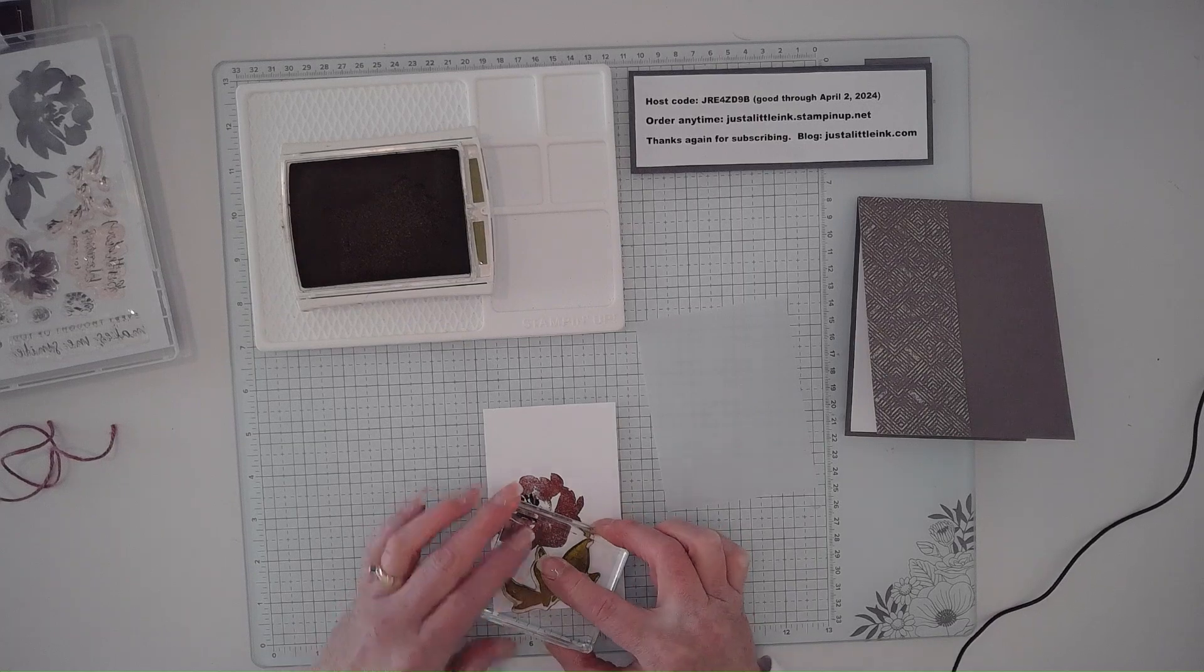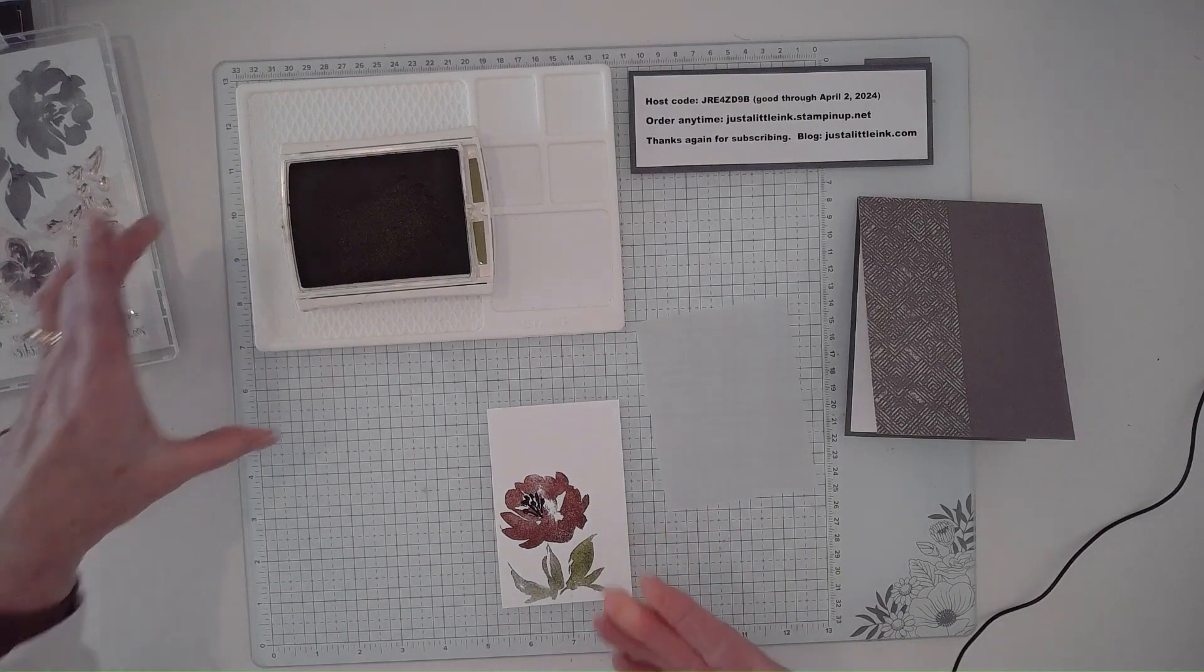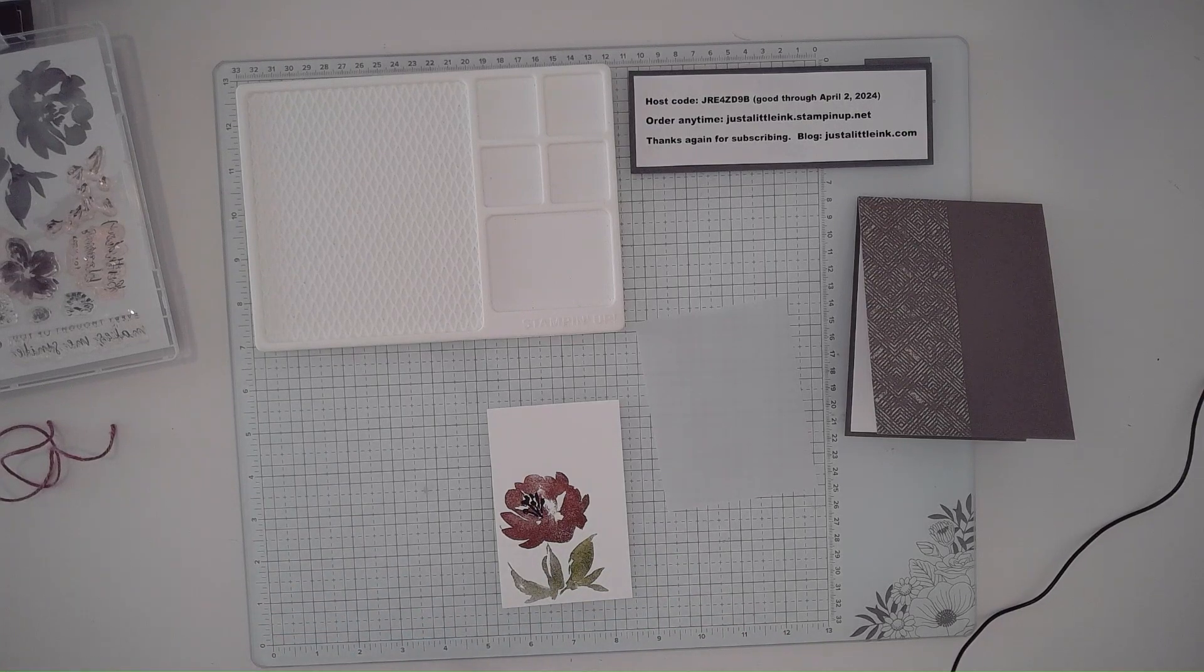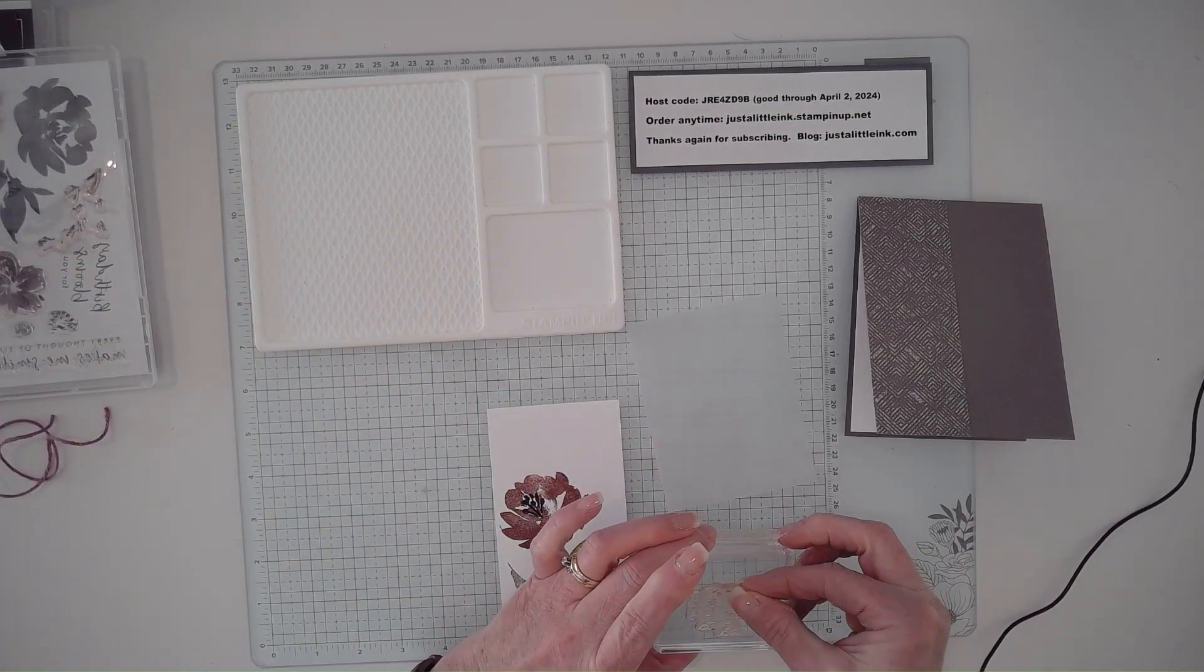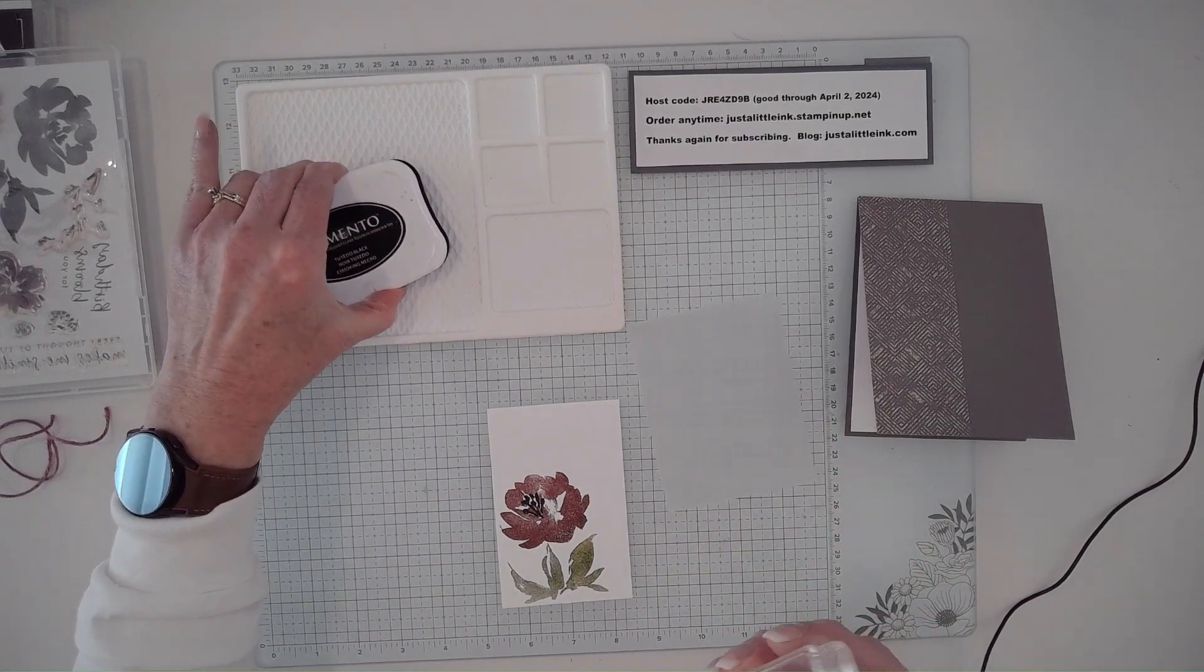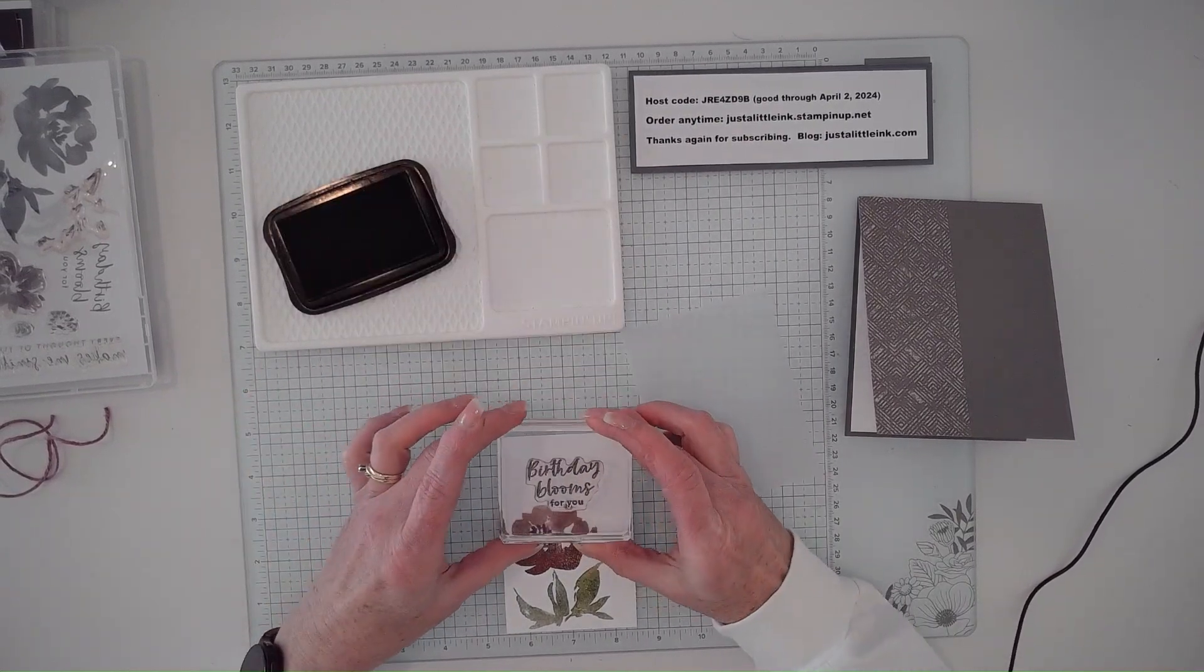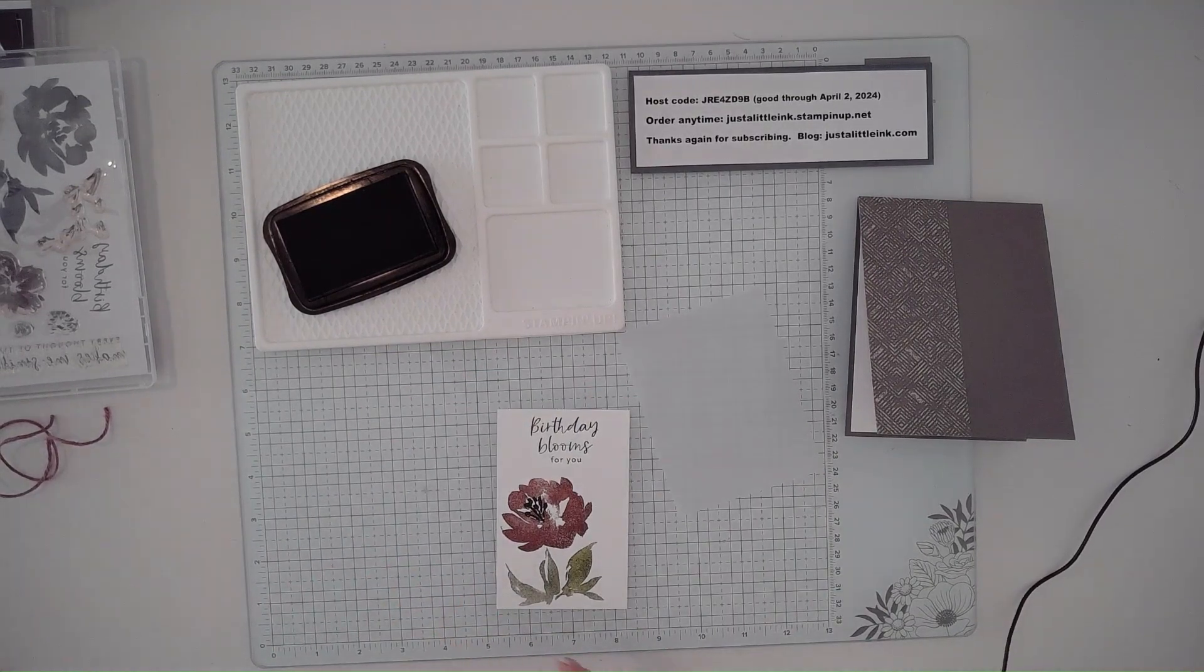I want those words. I didn't grab the correct color. We're going to go ahead and just stamp it in Tuxedo Black just because I want to show you what it looks like. This is really why I bought the whole stamp set. I loved the 'Birthday Blooms for You.' I just really like this stamp, and the flowers are pretty too.